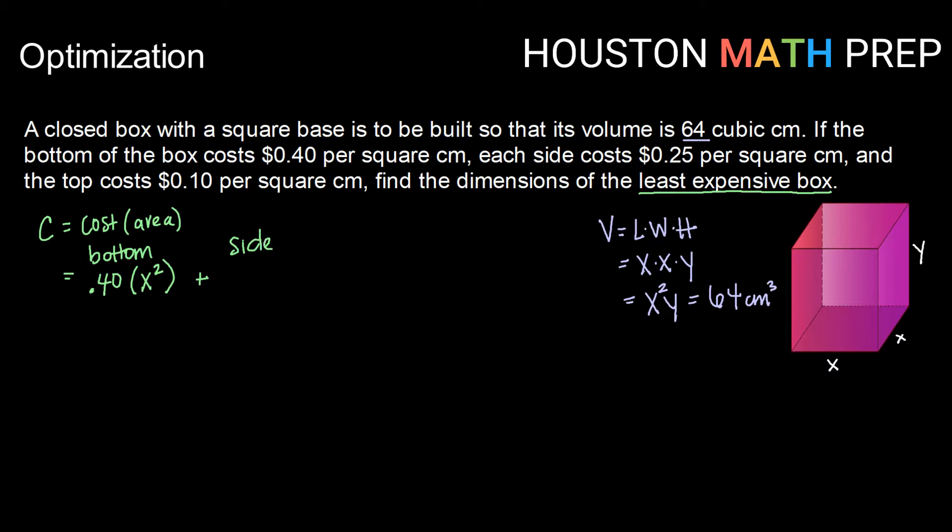Plus, next we'll work on the sides and we're going to remember that there are four sides. Each of those four sides of our box has an area of x times y and each side costs 25 cents. Since there are four of them, we're also going to multiply that quantity by 4. And finally we've got the top of our box. The top of our box costs 10 cents and it will also have the same dimensions as the bottom, x by x or x squared.